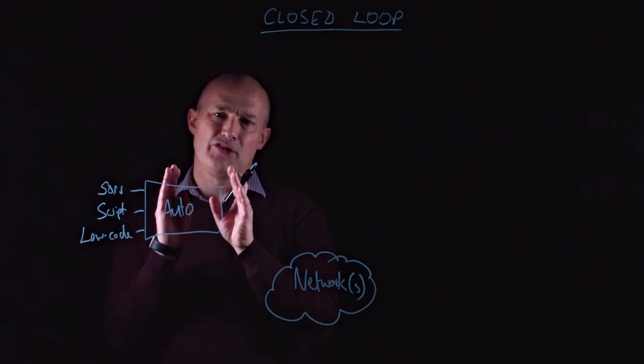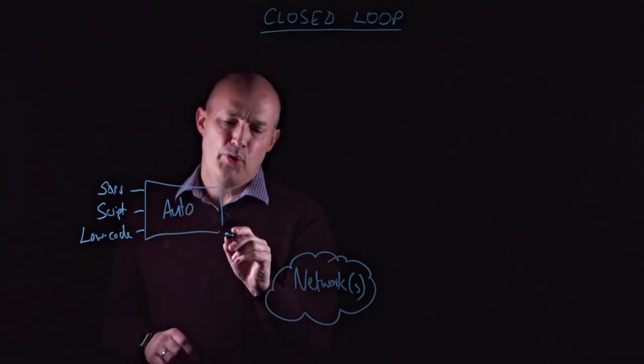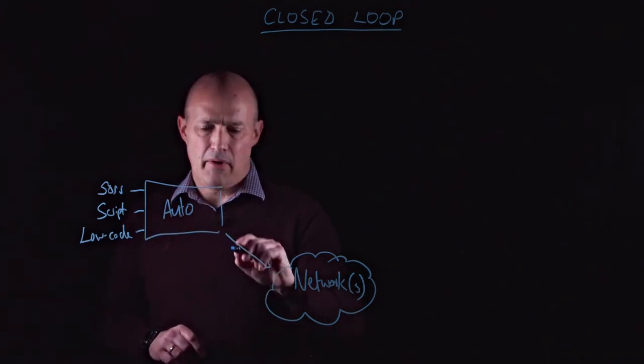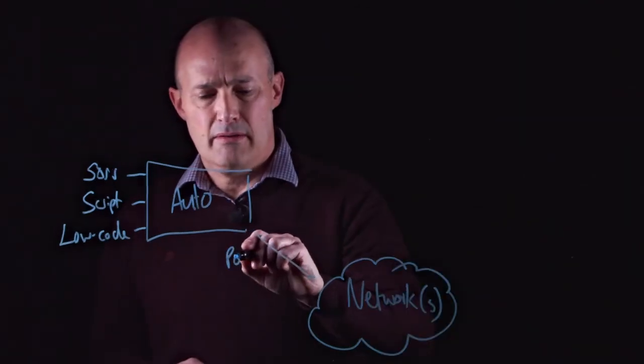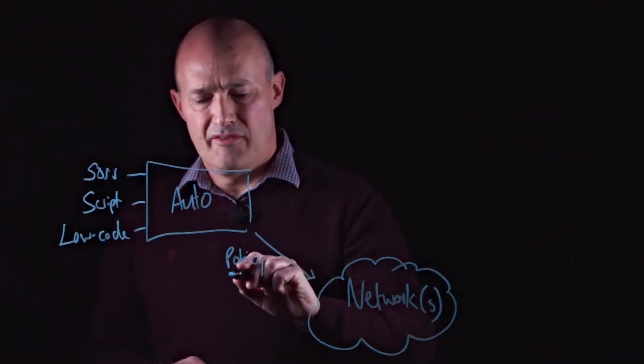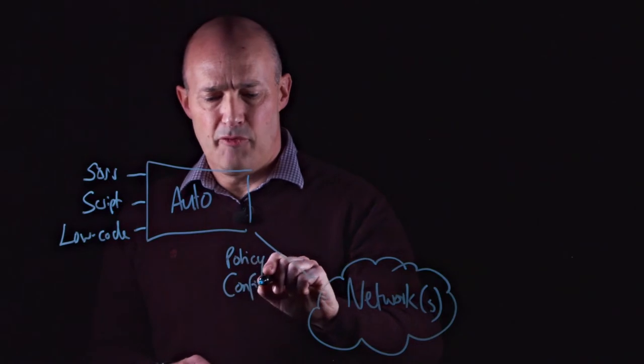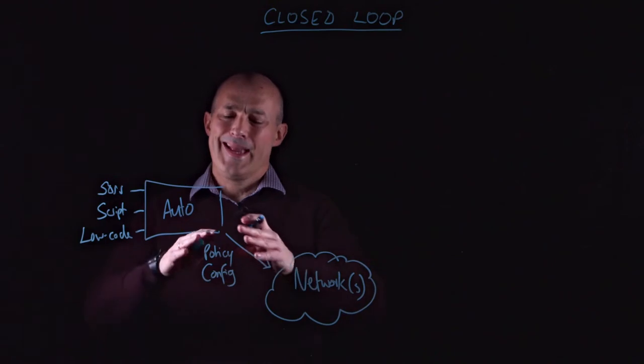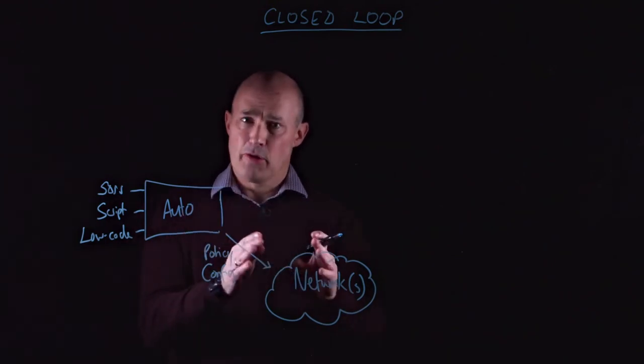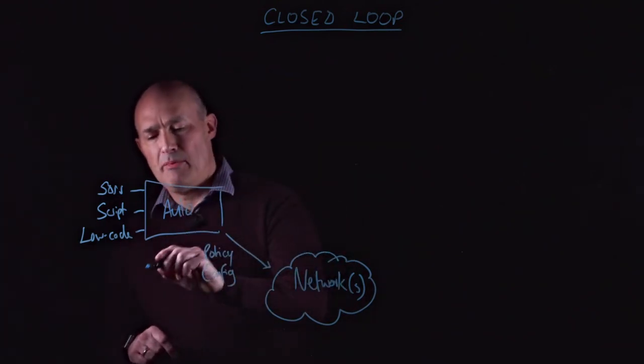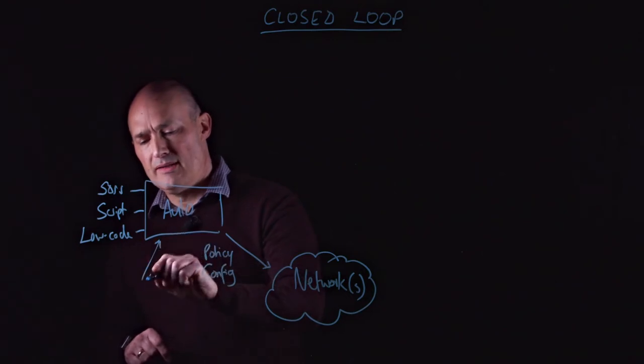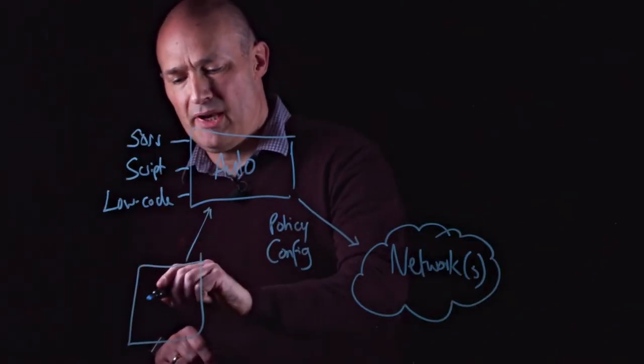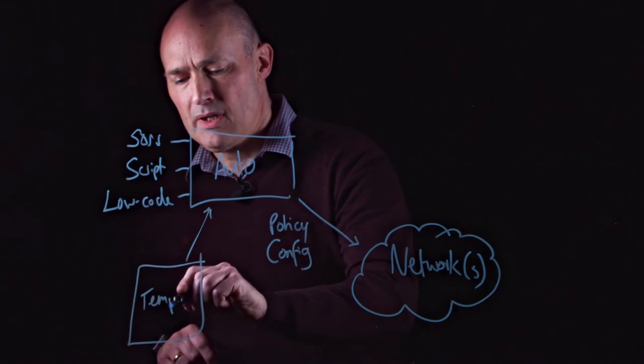And essentially what that automation platform is doing is pushing to the network either policy or configuration information in order to make changes in that environment. Now, it has to generate the configuration or the policy from somewhere. So typically what it will use is a series of templates.